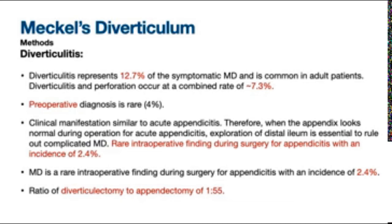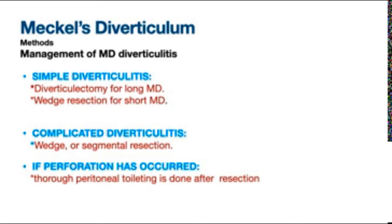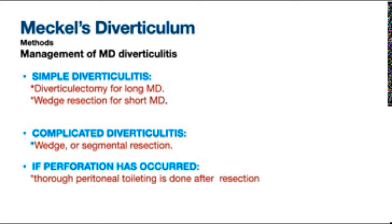Detection of Meckel's diverticulum intraoperatively is rare, with an incidence of 2.4%. Surgical management of inflamed Meckel's diverticulum depends on the degree of inflammation. For simple diverticulitis: diverticulectomy for long diverticula or wedge resection for short diverticula. For complicated diverticulitis: wedge or segmental resection. If perforation is present, thorough peritoneal lavage is performed.